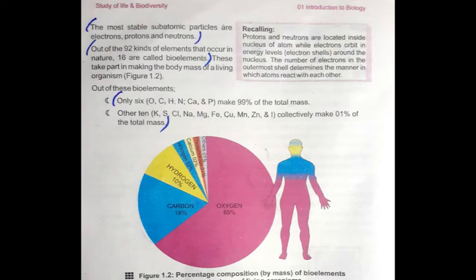You will also get answers to short questions in your assignment from this lecture, and you will get an idea for MCQs as well. Out of 92 kinds of elements, 16 are bio-elements. These take part in making the body mass of a living organism. Out of the total 16 elements, 6 elements make 99% of the total mass, and the remaining 10 elements collectively make 1% of the total mass. Total 16 bio-elements — out of which only 6 make 99% of the total mass and the other 10 collectively make 1% of the total mass.